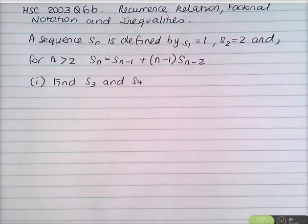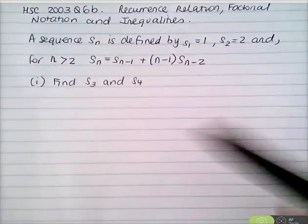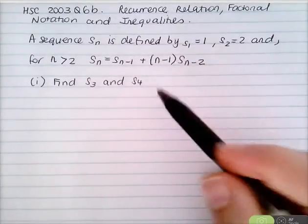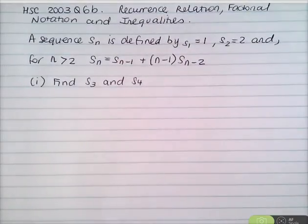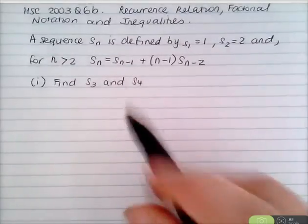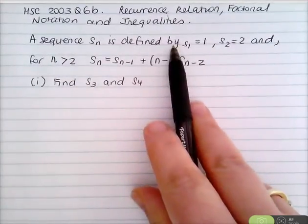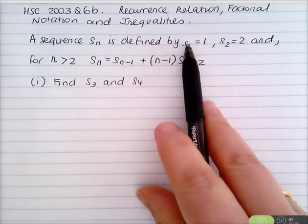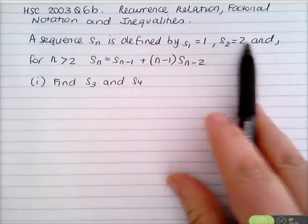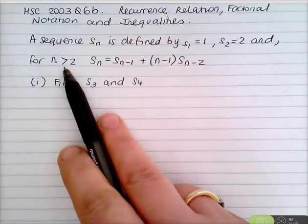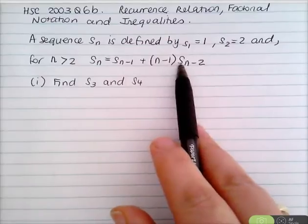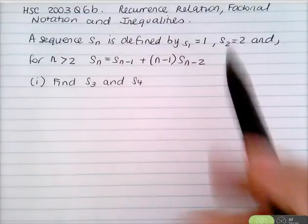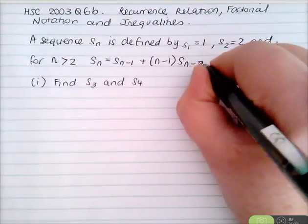One more example. This is HSC 2003 Question 6b, which combines a recurrence relation, factorial notation, and inequalities. The sequence S_n is defined by S₁ = 1, S₂ = 2, and for n > 2, S_n = S_{n−1} + (n−1)·S_{n−2}.